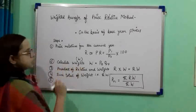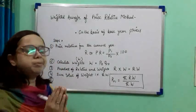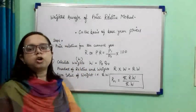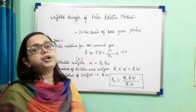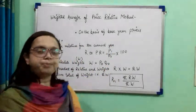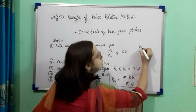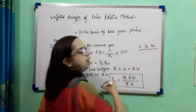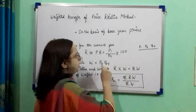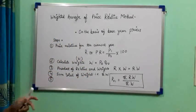Next, calculate the weights. If weights are already given in the question, we do not need to calculate them. If not given, calculate W = P0 × Q0 — the product of the price and quantity of the base year. From the given items P1, P0, and Q0, we compute PR = P1/P0 and W = P0 × Q0.